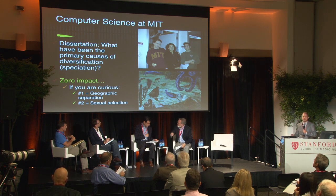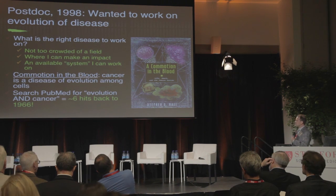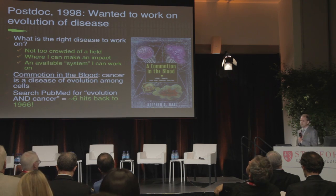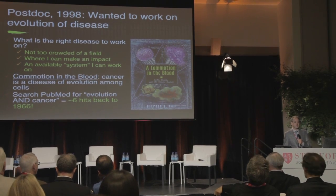I did a dissertation on why we have so many species — what was the cause of diversification — which had basically zero impact. So after the PhD, I decided I really wanted to get back into the evolution of disease because I found that really fulfilling. The question was what was the right disease to work on. I went to work with Stephanie Forrest at the University of New Mexico, and we spent a semester looking around. HIV was too crowded. We were looking for a field where we could make an impact, and stumbled across a description in the book Commotion in the Blood — about immune therapy in cancer — that cancer is an evolutionary process, a disease of evolution among the cells. I had never heard of that before, so I went to PubMed and asked for all the articles with 'evolution' and 'cancer' in the title, and got approximately six hits back in 1996. I was just floored by this — there was basically nothing written on it.